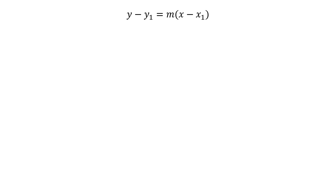Slope intercept form is y equals mx plus b. Now the point slope form is y minus y1 equals m parenthesis x minus x1. We have the same letters involved — y, x, and m. We don't have a b here because we're not going to use an intercept. Remember, b is the y-intercept, which is why the other one is the slope intercept form. We're going to use this when we have a point, like an xy value, and don't have a b.